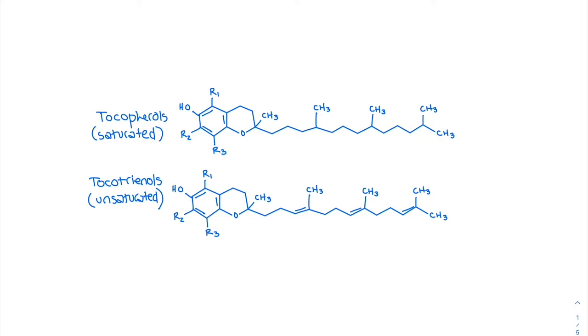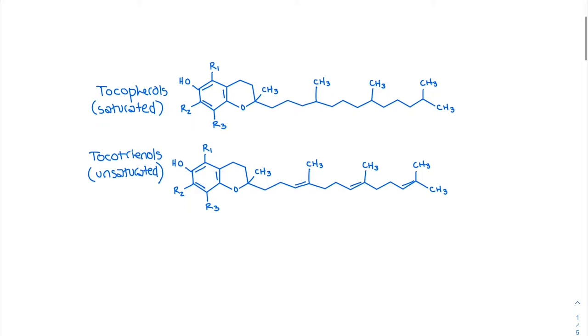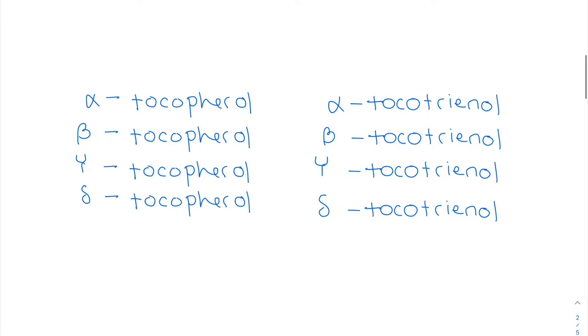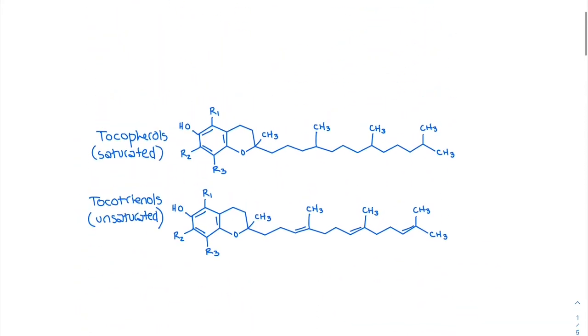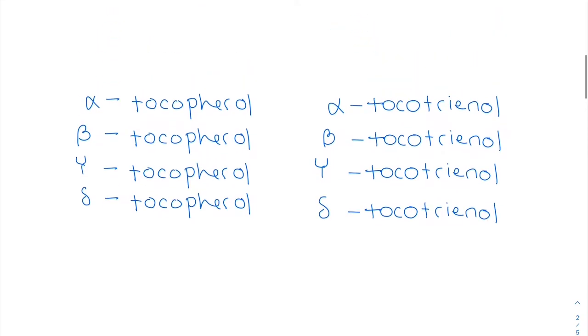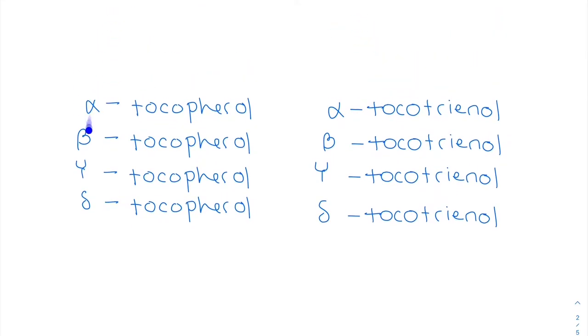So the only difference structurally is these double bonds are not here. Yeah, so each class, tocopherols, tocotrienols, have four vitamins. So there are eight total vitamins for vitamin E.